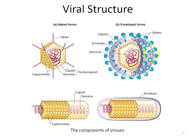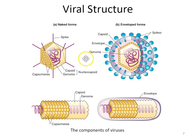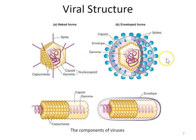Some viruses also have a layer of membrane stolen from the host. Those viruses are called enveloped viruses, whereas ones that lack that membrane are called naked viruses. Viruses often have spike proteins associated with them, which are important in a variety of functions including attachment of the virus to the host cell. The SARS-CoV-2 virus has spike proteins on it that look like this — it is also an enveloped virus.